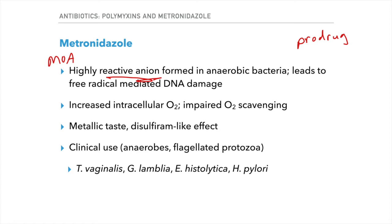Resistance to metronidazole can develop due to an increased level of intracellular O2. This intracellular O2 can compete with metronidazole for electrons. When levels of O2 rise, metronidazole is less likely to enter its active nitro-radical anion form, and so it's less likely to elicit DNA damaging. Another resistance mechanism is impaired O2 scavenging, meaning there is simply more O2 around.